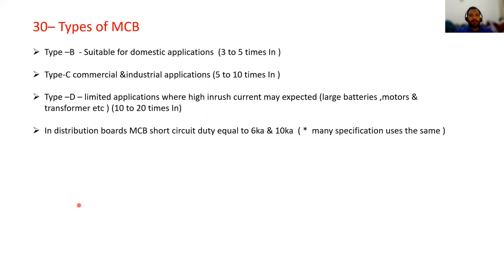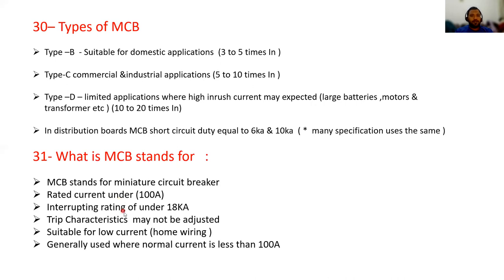In distribution boards, MCB short circuit duty is equal to 6 kA to 10 kA. What does MCB stand for? MCB stands for miniature circuit breaker: rated current under 100 amperes, interrupting rating under 18 kA, trip characteristics may not be adjusted, suitable for low current, generally used for home wiring where normal current is less than 100 amperes.